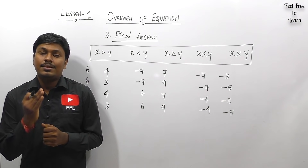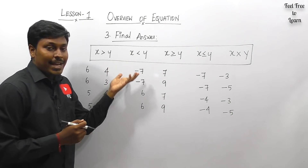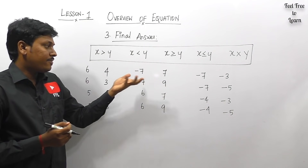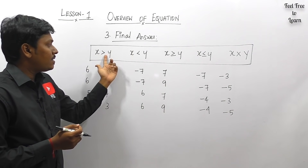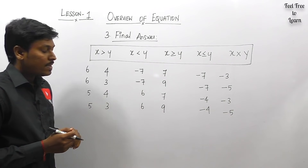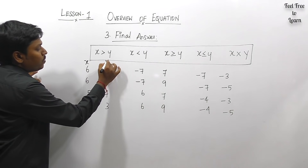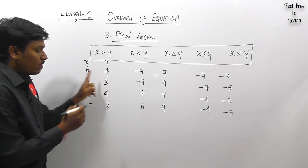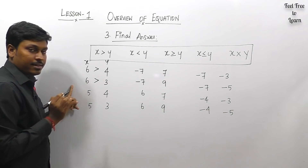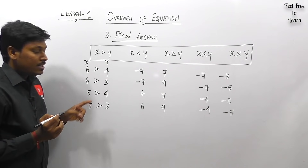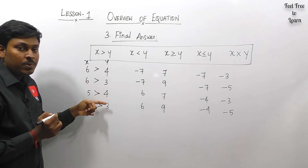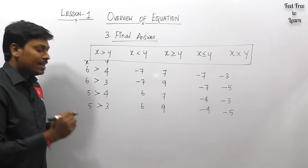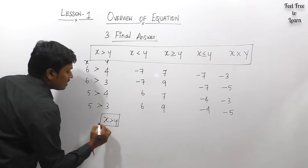The third step is stating the final answer. After finding and comparing x and y values, you must say whether x > y, x < y, x ≥ y, x ≤ y, or the relationship cannot be determined. For example, if x values are 6 and 5, and y values are 4 and 3: comparing all pairs — 6 > 4, 6 > 3, 5 > 4, 5 > 3 — all comparisons give greater than, so the final answer is x > y.